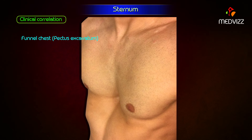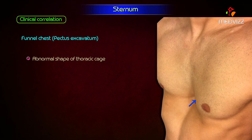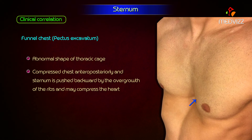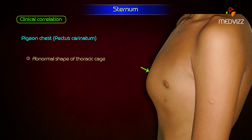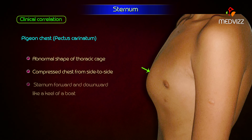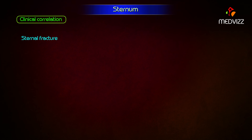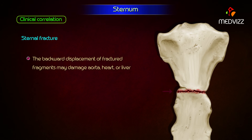Funnel chest or pectus excavatum refers to the abnormal shape of the thoracic cage in which the chest is compressed anteroposteriorly and the sternum is pushed backwards by overgrowth of the ribs, which may compress the heart. Pigeon chest or pectus carinatum refers to the abnormal shape in which the chest is compressed from side to side and the sternum projects forwards and downwards like the keel of a boat. Sternal fracture is commonly seen in automobile accidents when the driver's chest hits the steering wheel. The sternum is often fractured at the sternal angle, and backward displacement of fractured fragments may damage the aorta, heart, or liver, causing severe and potentially fatal bleeding.